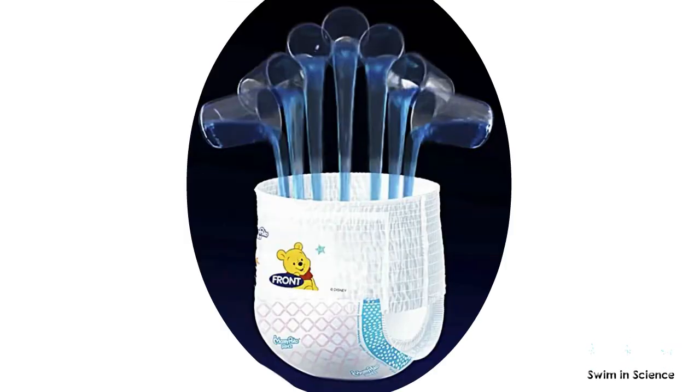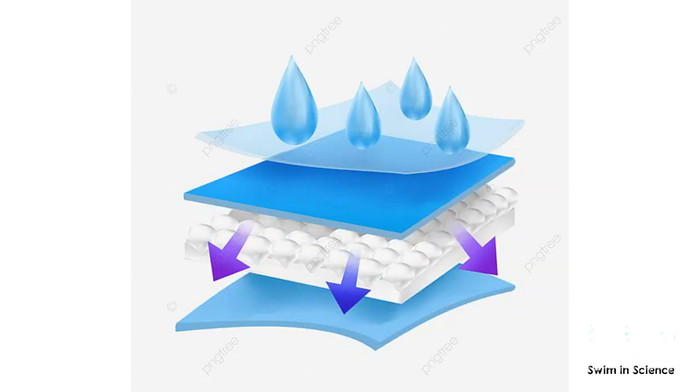So, how is it possible for a small and thin disposable diaper to hold such a huge volume of urine without leakage? To know this, let us first try to understand the structure of a disposable diaper.